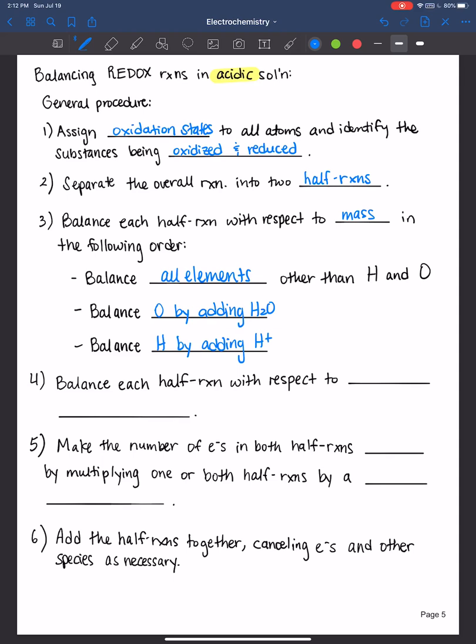Then step four, balance each half reaction with respect to charge. So first mass and then charge by adding electrons.